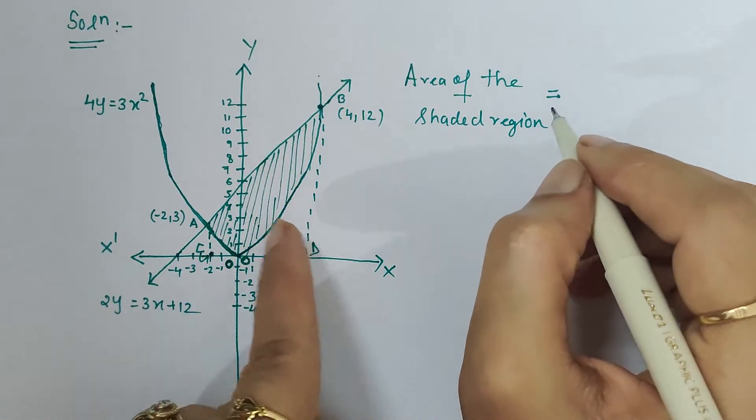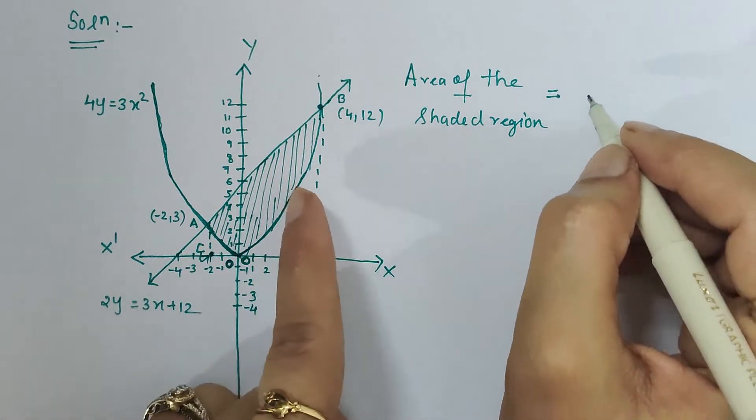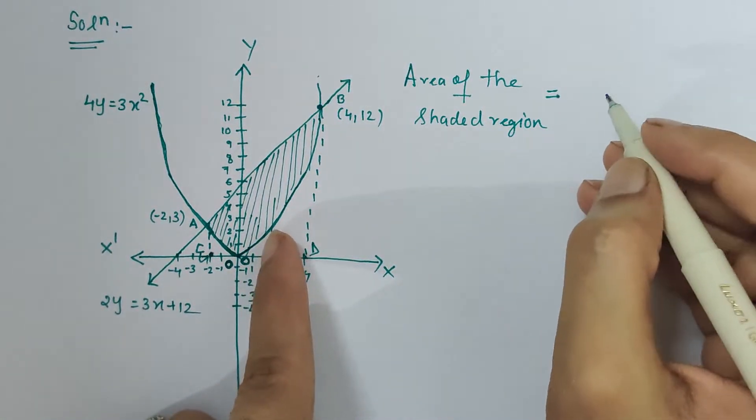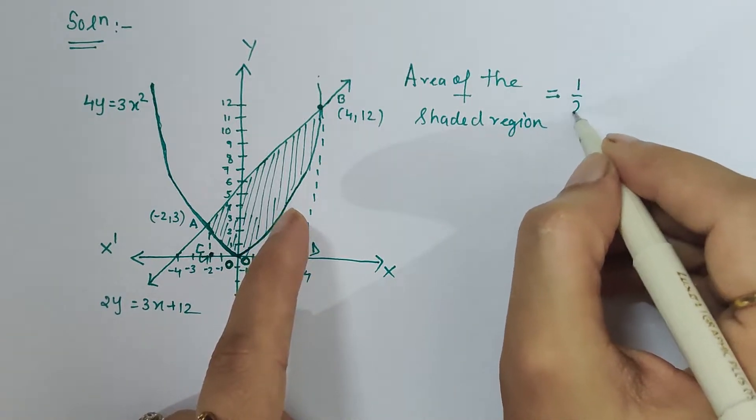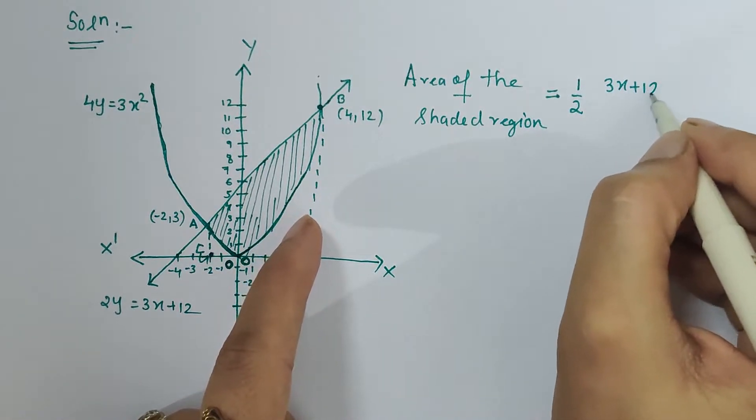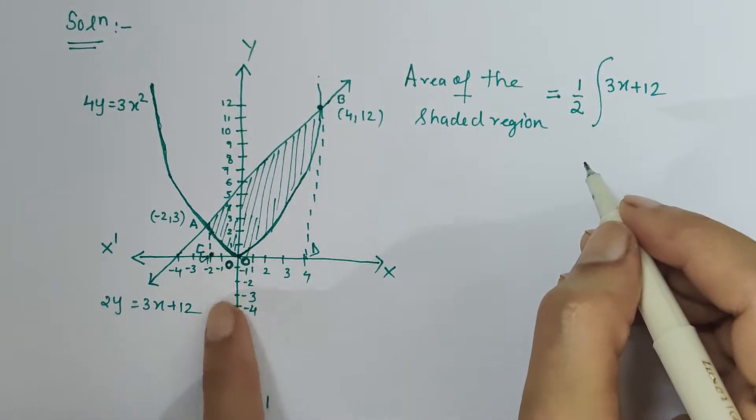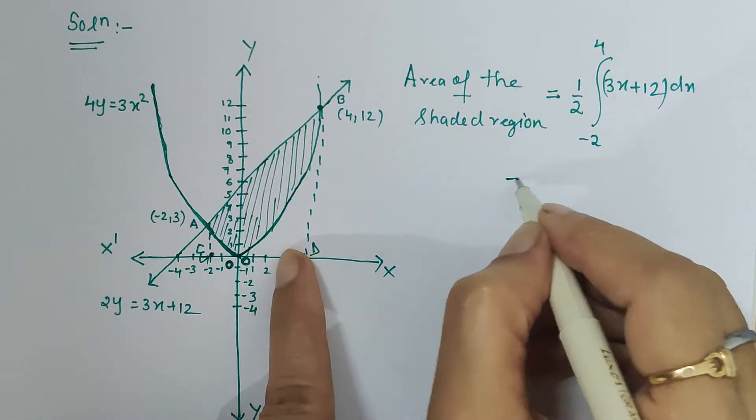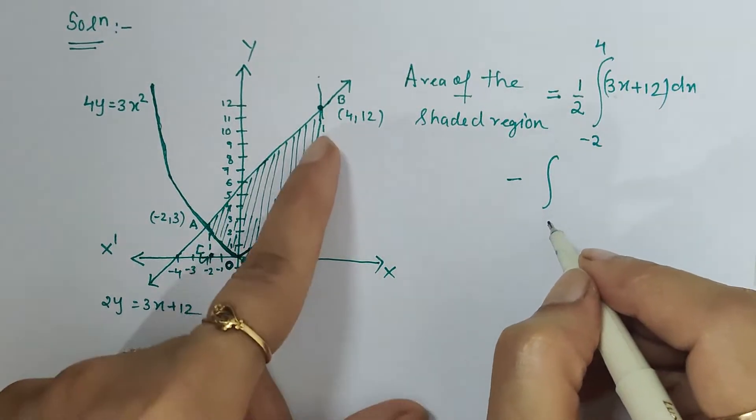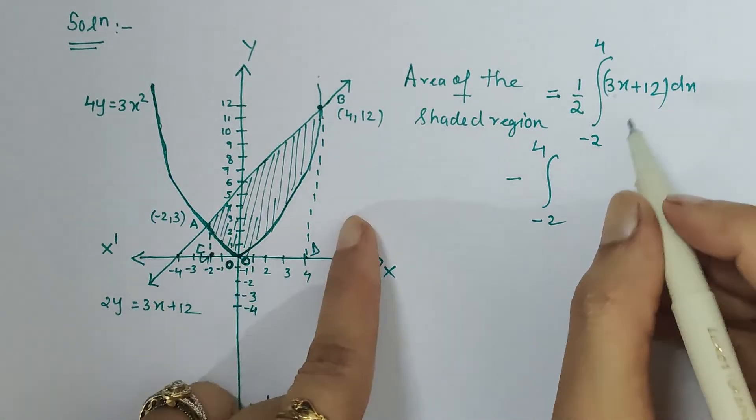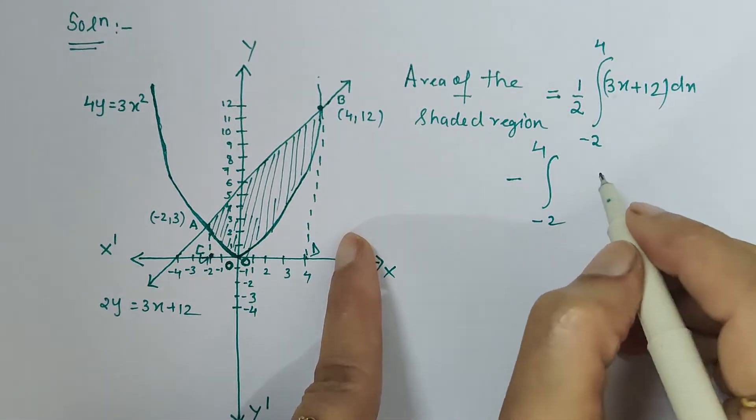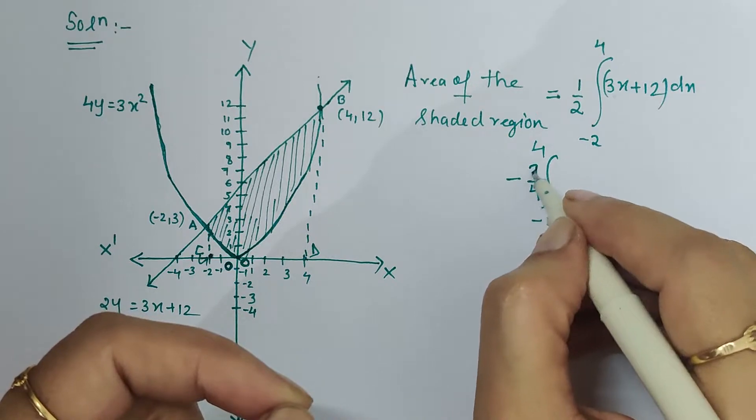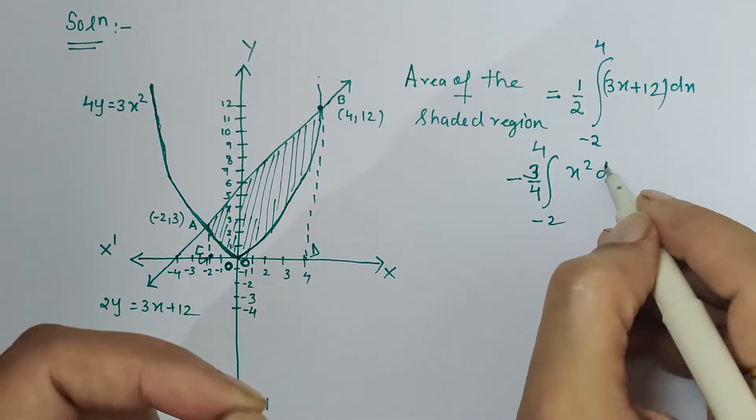So we will write equation of this first along x-axis, so the y value will be substituted. Equation of the line is 2y = 3x + 12, so y is half of (3x + 12). Integration will be over -2 to 4 dx, minus then again equation of the parabola. The equation of parabola is 4y = 3x², so in terms of x we will shift 4 to the right-hand side, so 1/4, and then 3 can be taken outside the integral sign: x² dx.